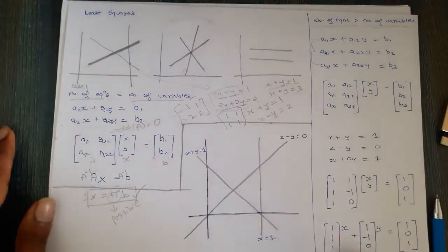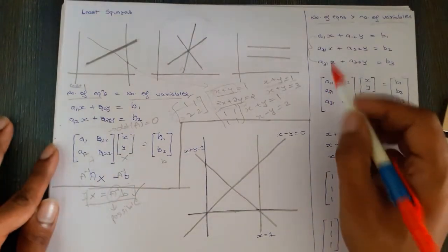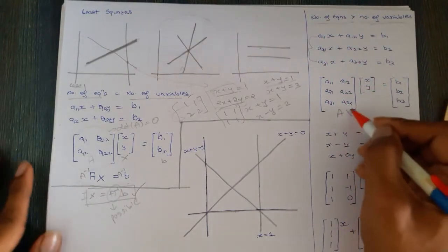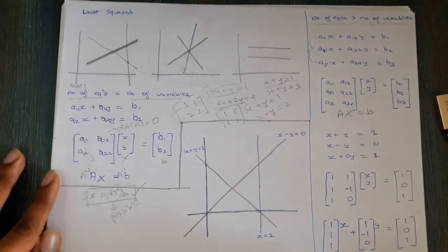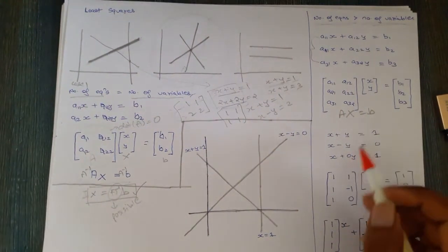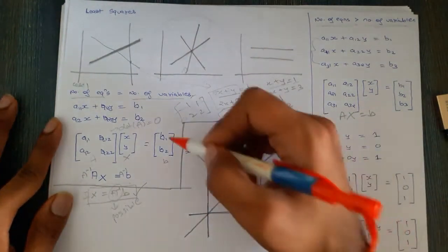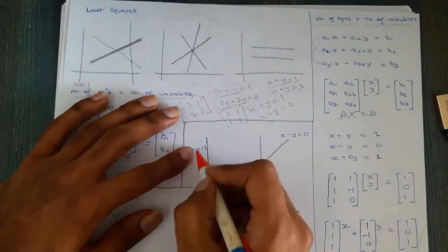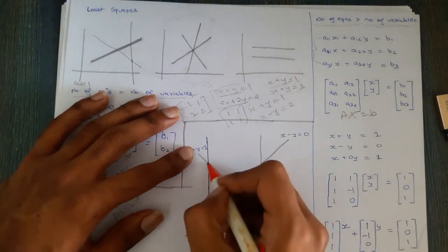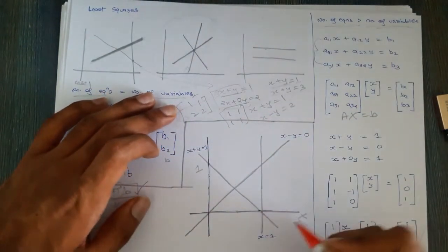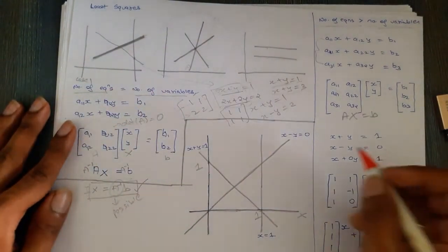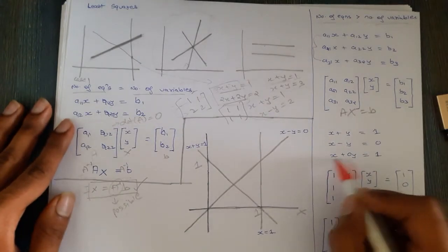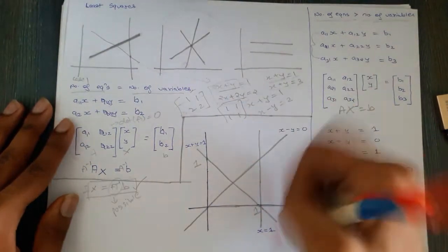Here is a concrete example. The matrix A and constant vector b are given. The three equations are: x + y = 1 (plotted by finding intercepts at (0,1) and (1,0)), x − y = 0 (meaning x = y, the 45-degree line), and x = 1 (a vertical line parallel to the y-axis). You can see there is no common solution point for all three lines.